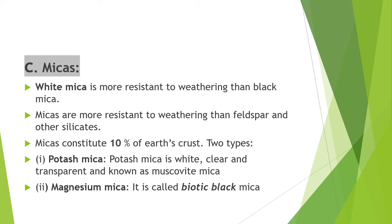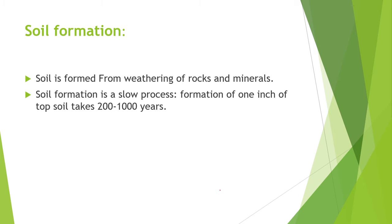Third is mica. White mica is more resistant to weathering than black mica. Mica constitutes about 10% of the earth's crust. White mica is called potash mica — it is white in color, clear and transparent, also known as muscovite. While magnesium mica is black in color and is known as biotite mica.